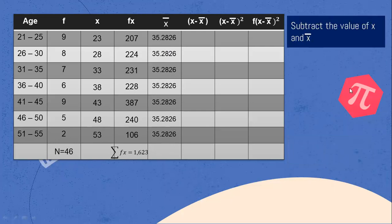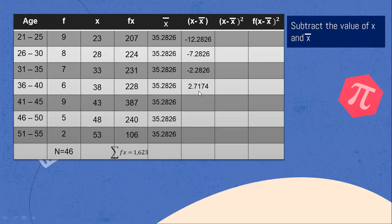Next step: subtract the value of the midpoint and the mean. 23 minus 35.2826 equals negative 12.2826. 28 minus 35.2826 equals negative 7.2826. 33 minus 35.2826 equals negative 2.2826. 38 minus 35.2826 equals 2.7174. 43 minus 35.2826 equals 7.7174. 48 minus 35.2826 equals 12.7174.